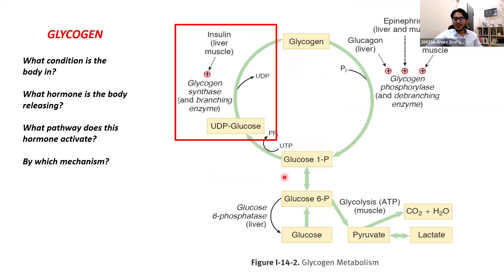When you eat a high-carbohydrate meal, your insulin is active — you're in a well-fed condition — so glycogen synthesis happens in a well-fed condition. How does insulin activate glycogenesis? Insulin activates glycogen synthase by dephosphorylation. Because this effect is by dephosphorylation and not at the gene level, it's quick to happen. Gene expression effects of hormones take longer to happen.